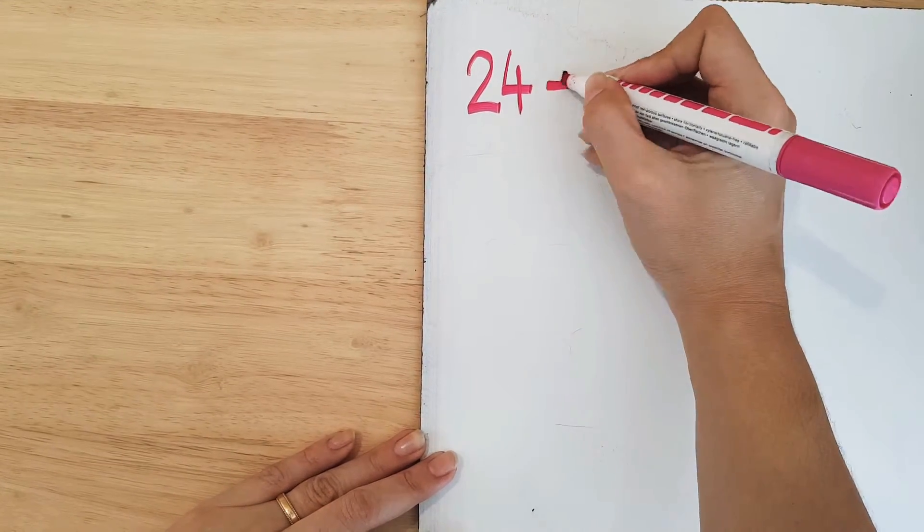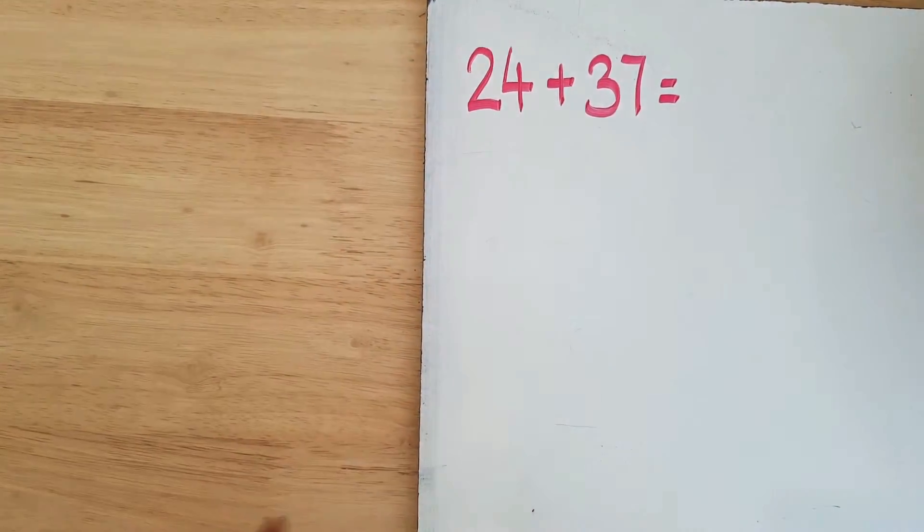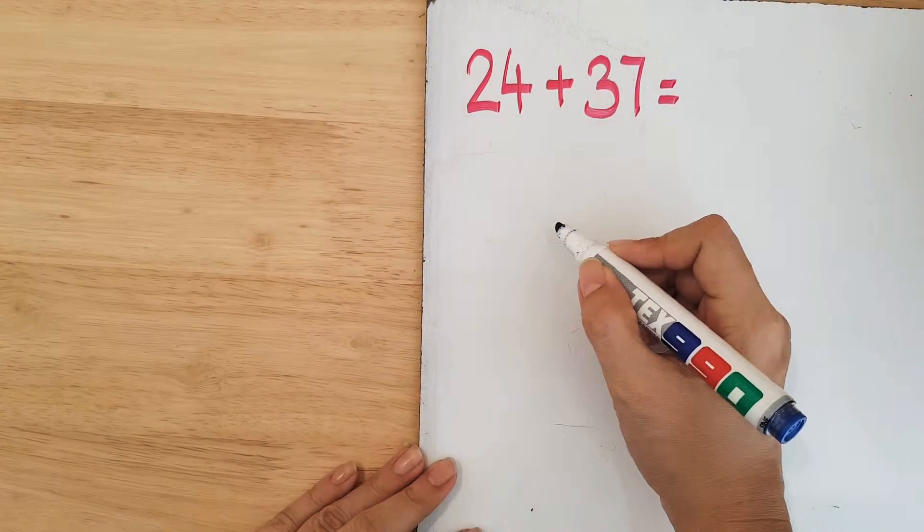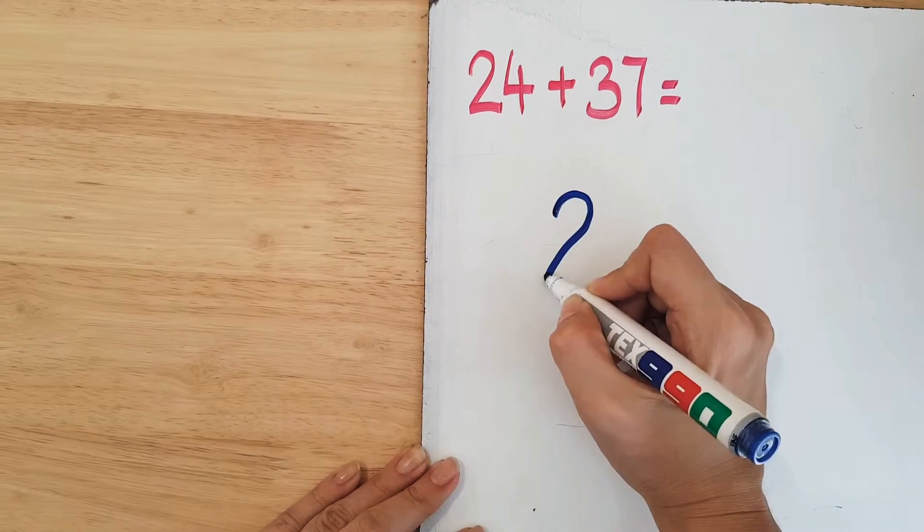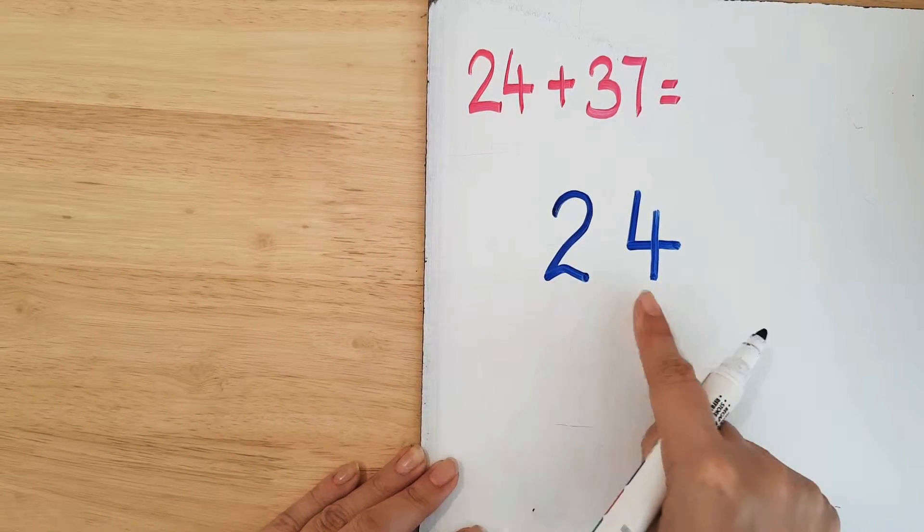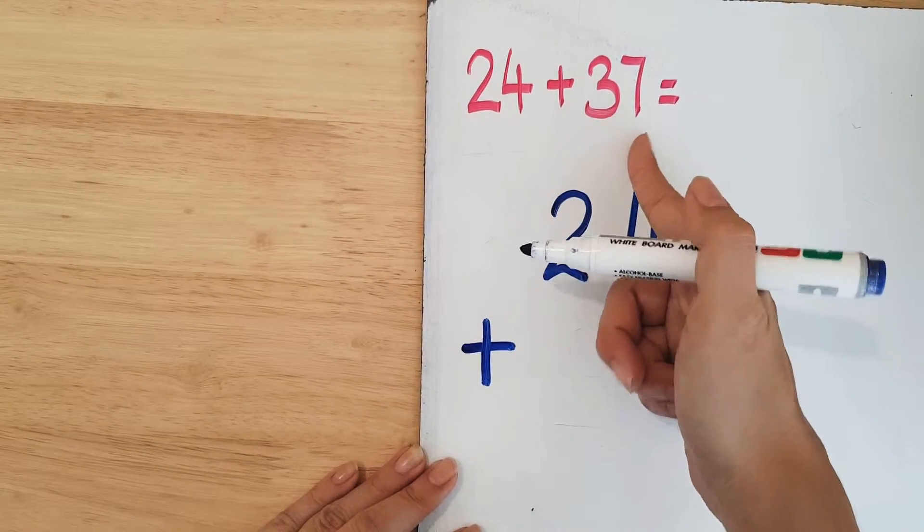Because I want to learn how to use the standard algorithm, I'm going to write it out like this. I'm going to write 24, two tens and four ones, plus, and I'm going to align 37 to 24 because 37 is three tens and seven ones.